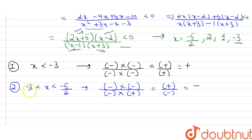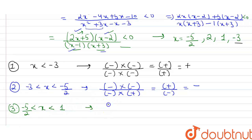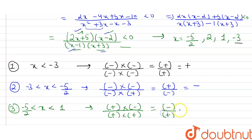For the third case, −5/2 < x < 1: substituting x = 0, the term (2x + 5) is positive and (x − 2) is negative, giving negative in the numerator. In the denominator (x − 1) is negative, giving −1, and (x + 3) is positive. So denominator is negative, and negative divided by negative is positive — this case does not satisfy the inequality.